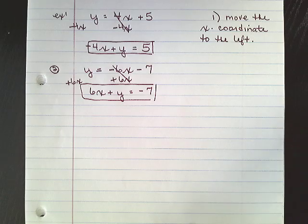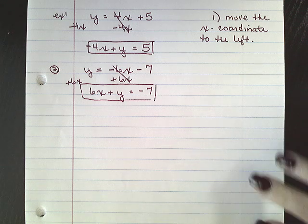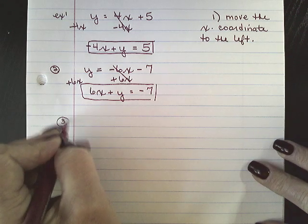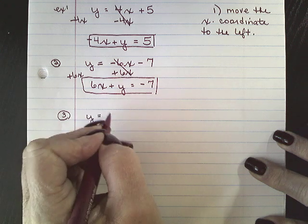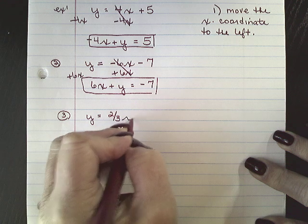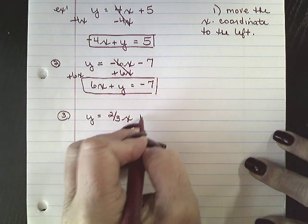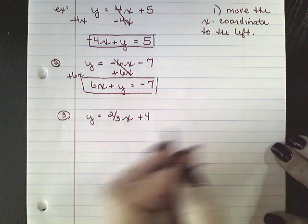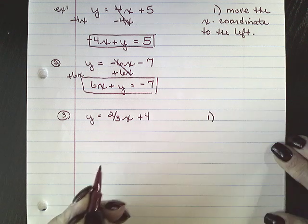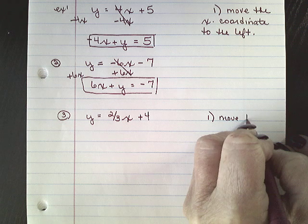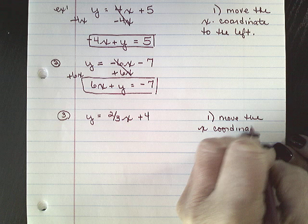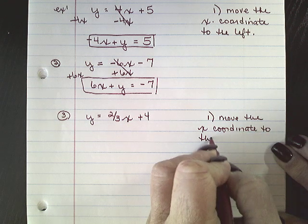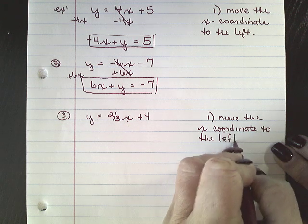Okay, so all we have to do is move that x-coordinate back and forth, depending on which format we want. Now what happens if we have a fraction? So if we have y equals 2 3rds x plus 4. Your step 1 is still going to be the same. Move the x-coordinate to the left.